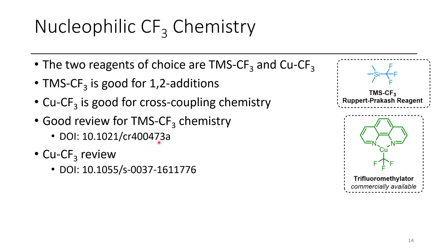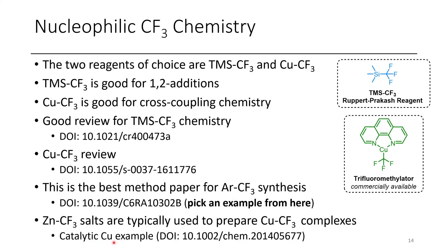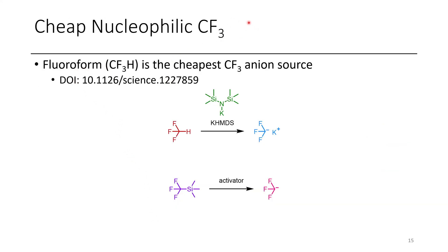There are good reviews for TMS-CF3 chemistry and copper CF3 chemistry referenced here, as well as a paper for the best methodology for Ar-CF3 formation using cross-coupling. Copper CF3 reagents are typically prepared from zinc CF3 salts, which can themselves be prepared from TMS-CF3. An alternative approach is to generate CF3 minus using fluoroform, which is cheap but slightly inconvenient as a gas. This K-CF3 anion can eliminate to CF2 carbene, which is also possible with TMS-CF3, but TMS-CF3 remains my method of choice.